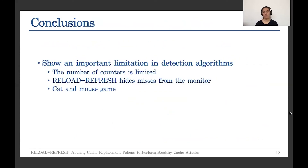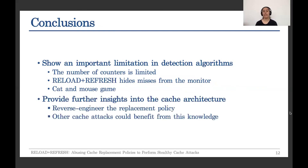So our work shows an important limitation in detection algorithms. Since the number of counters that a detection algorithm can use is limited, they have to perform a selection, and an attacker with great knowledge of the microarchitecture can hide the effect of the attack from this particular set of counters, meaning the attacker can bypass detection countermeasures. We also provide further details about the cache architecture through the replacement policy description we provide, and any other cache attack could benefit from this knowledge.